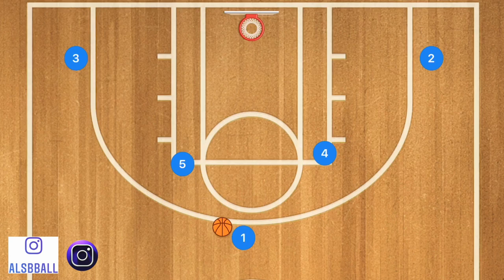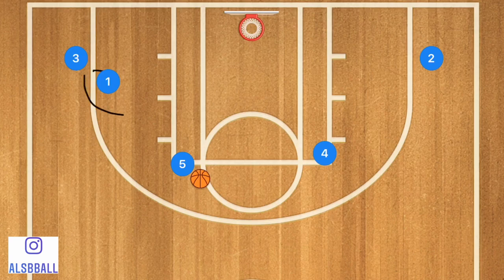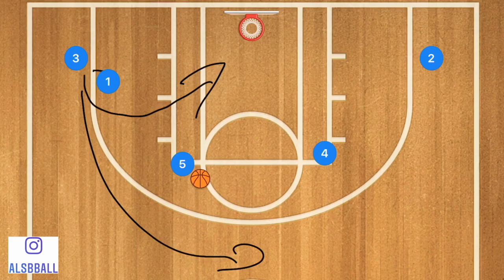What's going to happen first is we're going to pass to one of the two players up top — that will always be the starting action throughout the whole play. Player 1 is going to pass to Player 5. Player 1 will then go and set a screen for Player 3. Player 3 has two different options: he can cut towards the rim, or he can pop up to the point. One of those two options will be open.